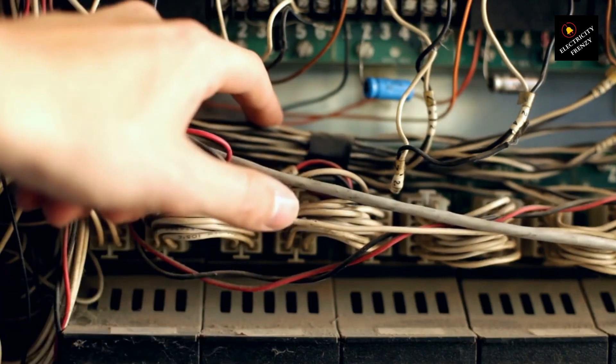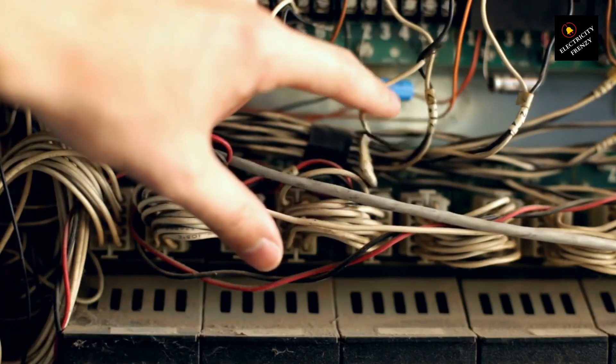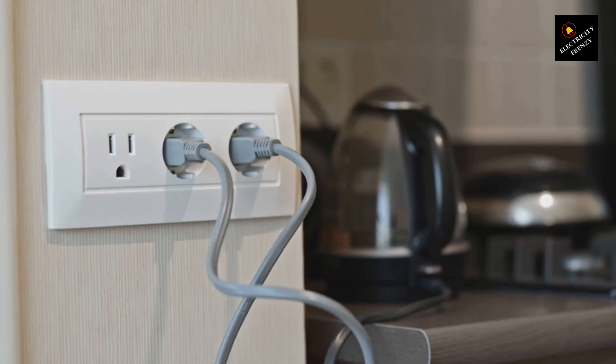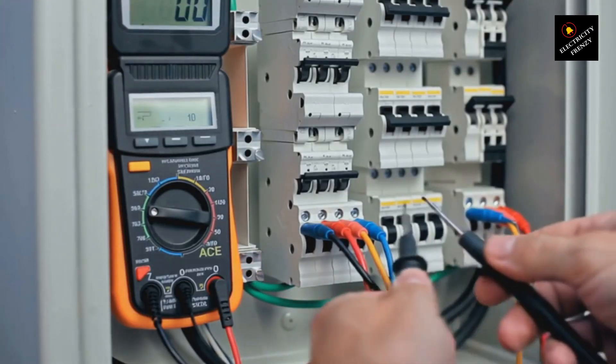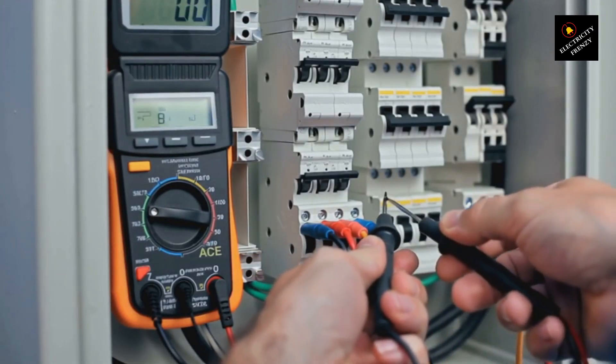Imagine this. You're plugging in your favorite device, and suddenly zap, the breaker trips instantly. That's your breaker doing its job to keep you safe. If it trips right away like this, it's most likely a short circuit.